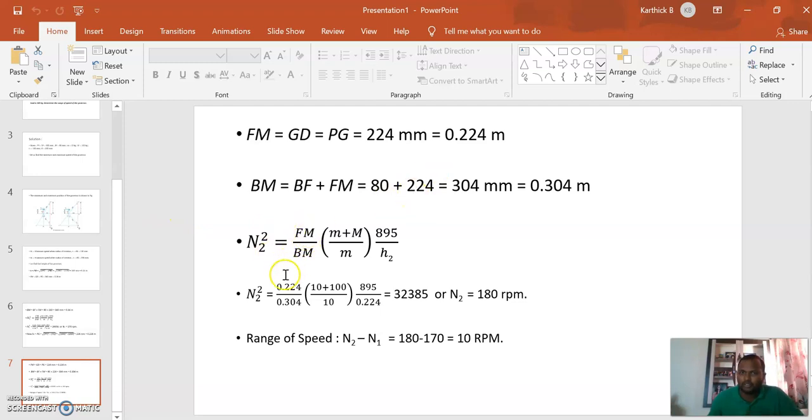Substituting the values: FM equals 0.224 meters, BM is 0.304 meters, mass of each ball, mass of central load, 895 by h2. We get N2 equals 180 rpm.